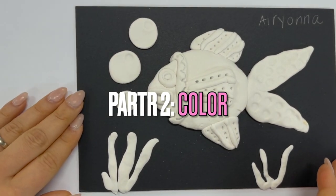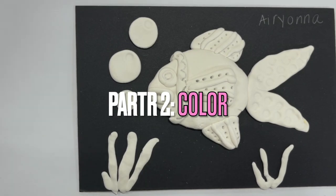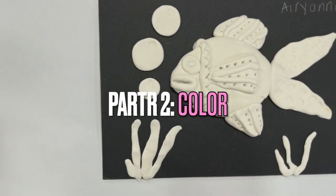Once your model magic fish sculpture has had time to fully dry you will be ready to add color. For this assignment we will be using bingo daubers to paint our relief sculptures.